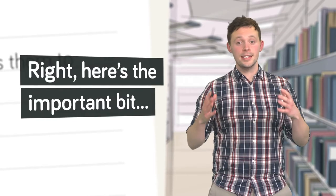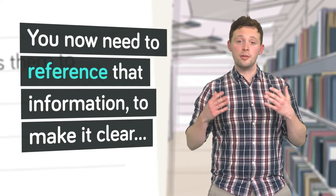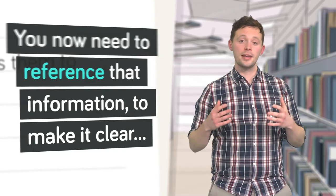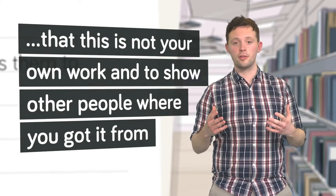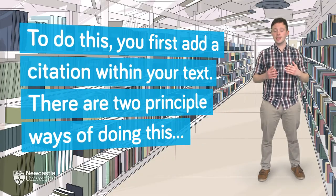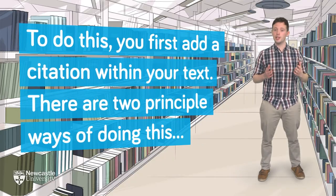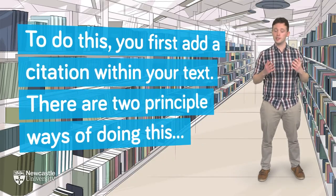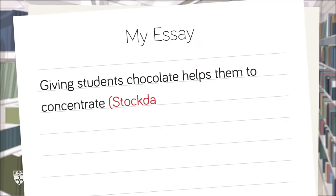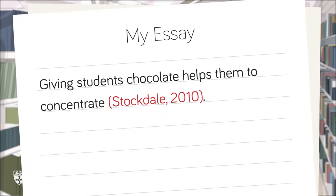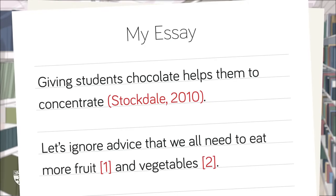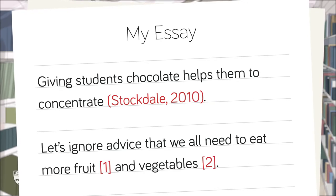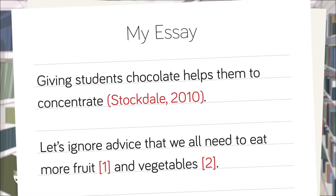Here's the important bit. You now need to reference that information to make it clear that this is not your own work, and it will show other people where you got it from. To do this, you first add a citation within your text. There are two principle ways of doing this: author-date, where you include the author's name followed by their date of publication, or numeric, where you include a simple number. Whichever it is, it will appear within or immediately after the referenced information.